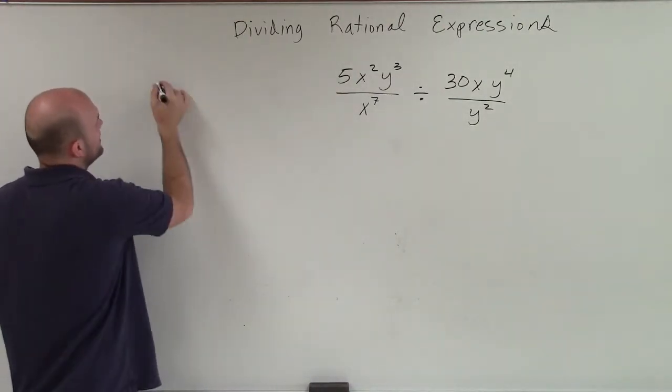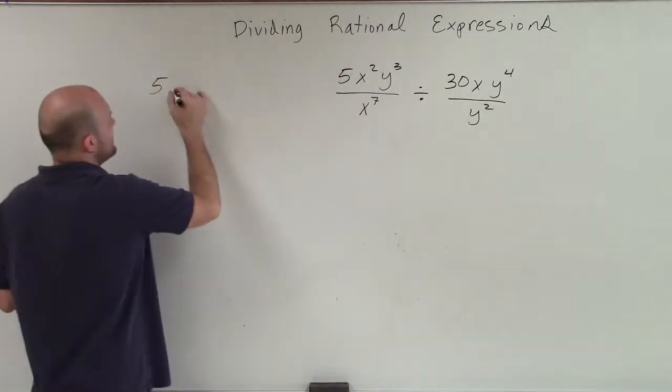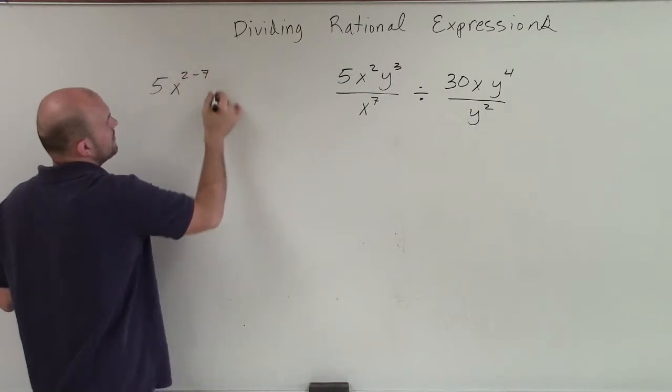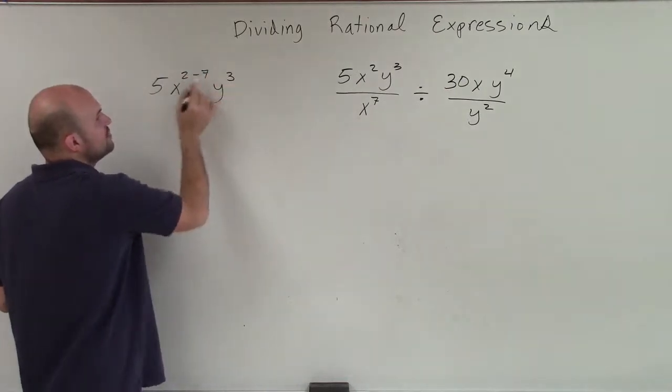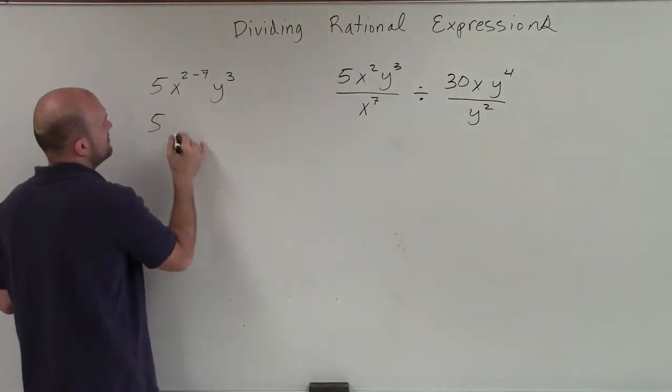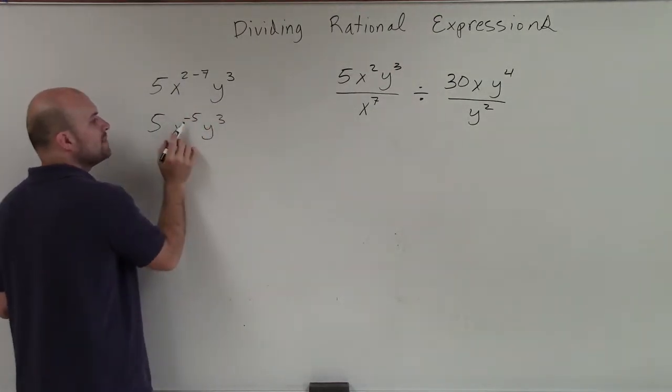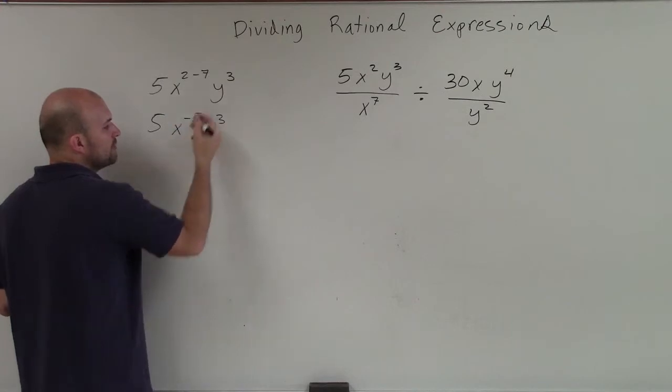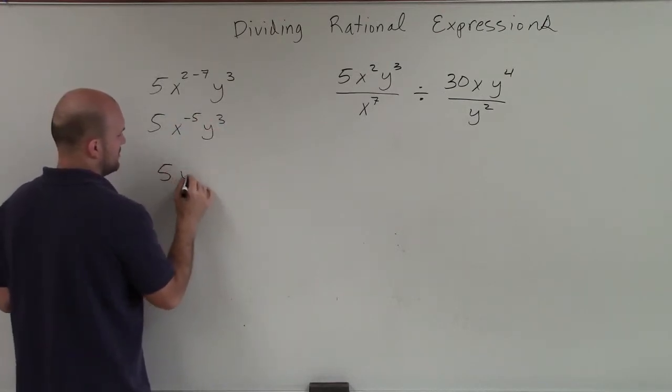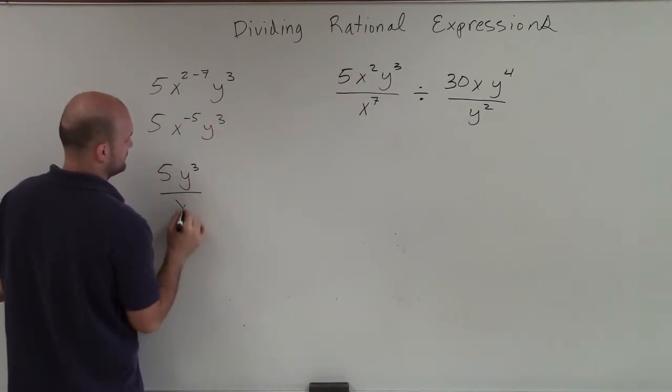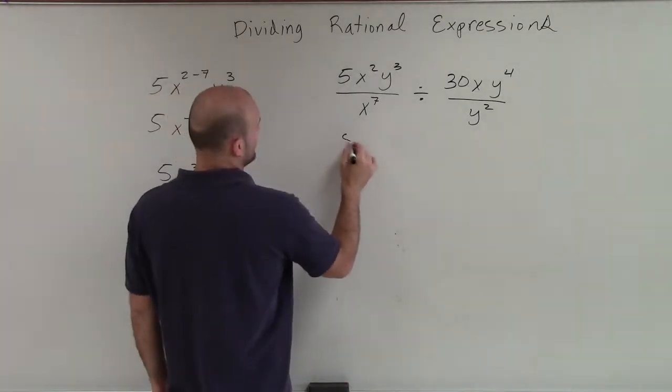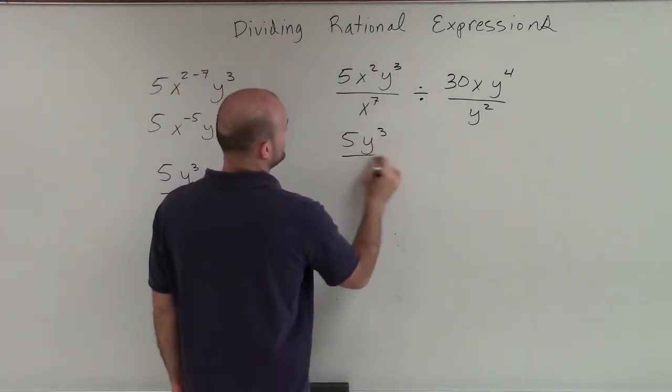So I can't do anything with my number 5. However, remember when we're dividing with the same base, we subtract the exponents. Now 2 minus 7 is going to be negative 5. So it's going to be 5x to the negative fifth y cubed. Now remember, when you have a negative in the numerator, we can put it in the denominator for it to be positive.